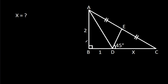In this video, we have been given a right-angle triangle ABC, in which AB is 2, AE is equal to CE, BD is 1, CD is X, and angle EDC is 45 degrees. We have to find X.